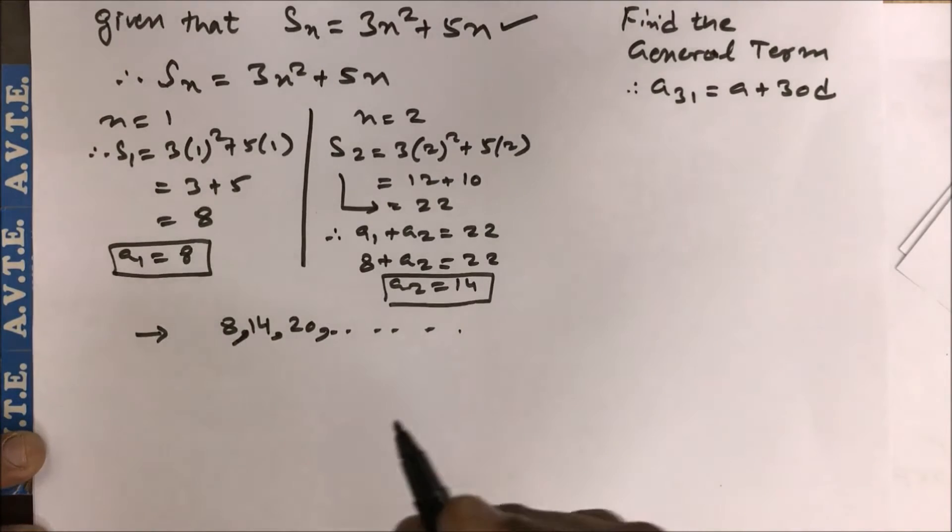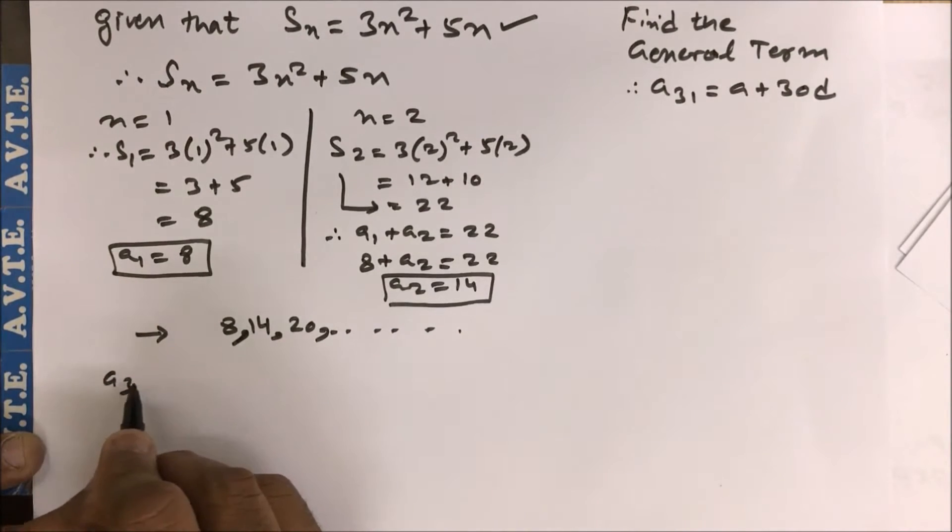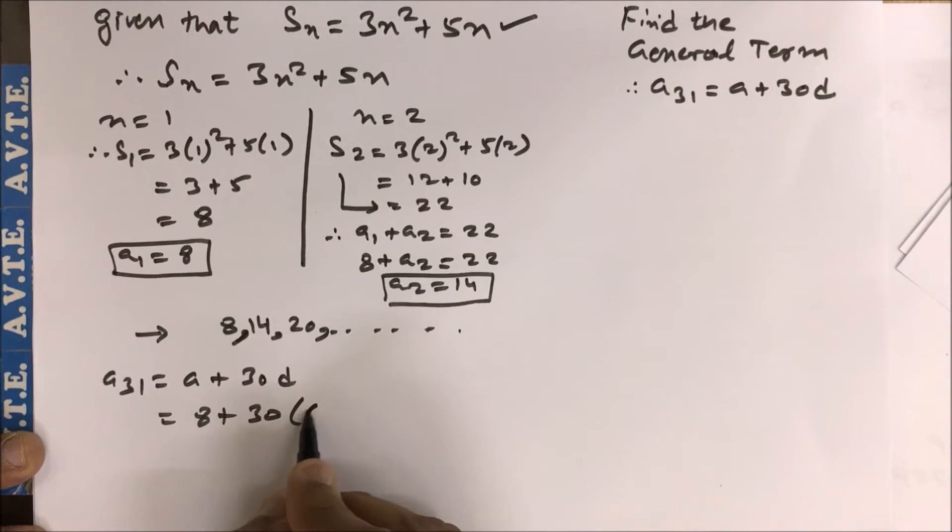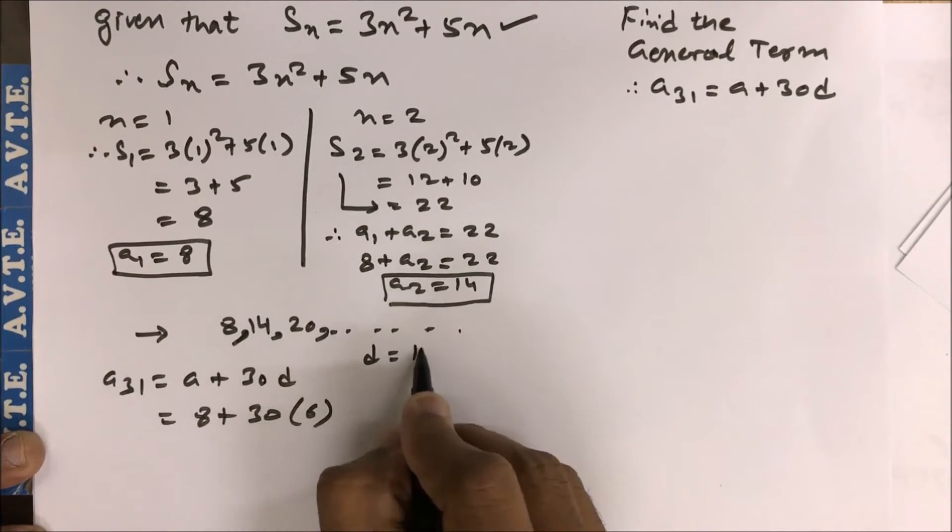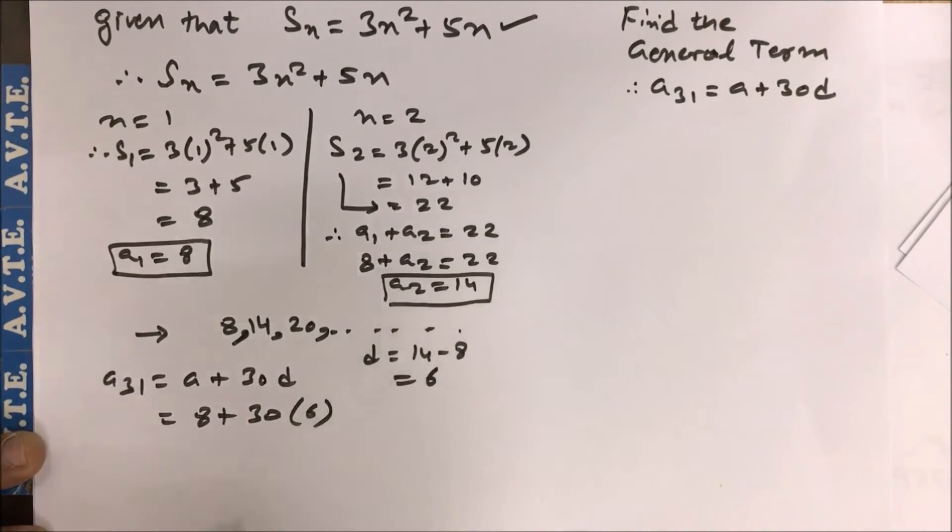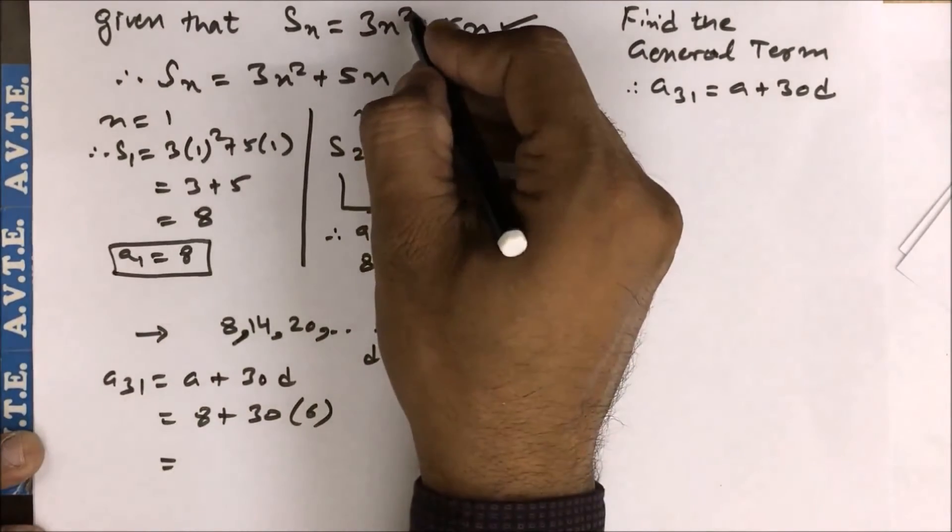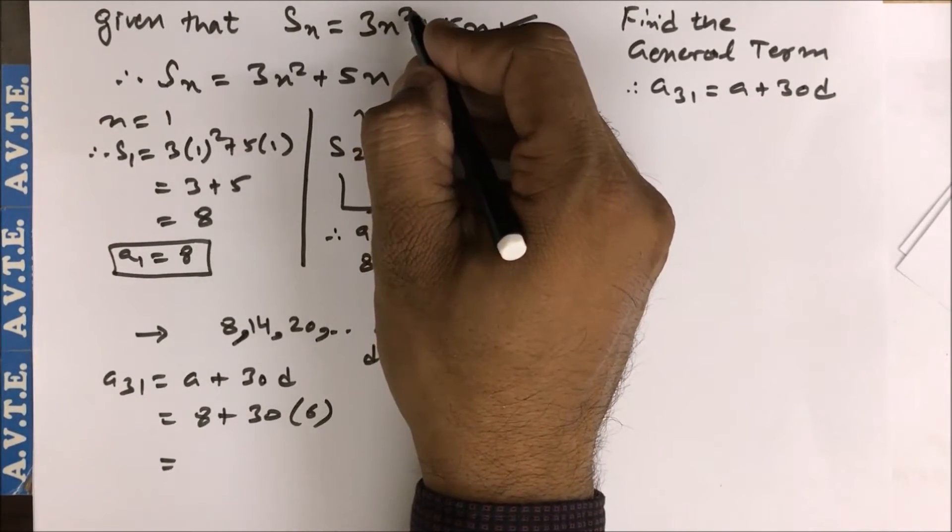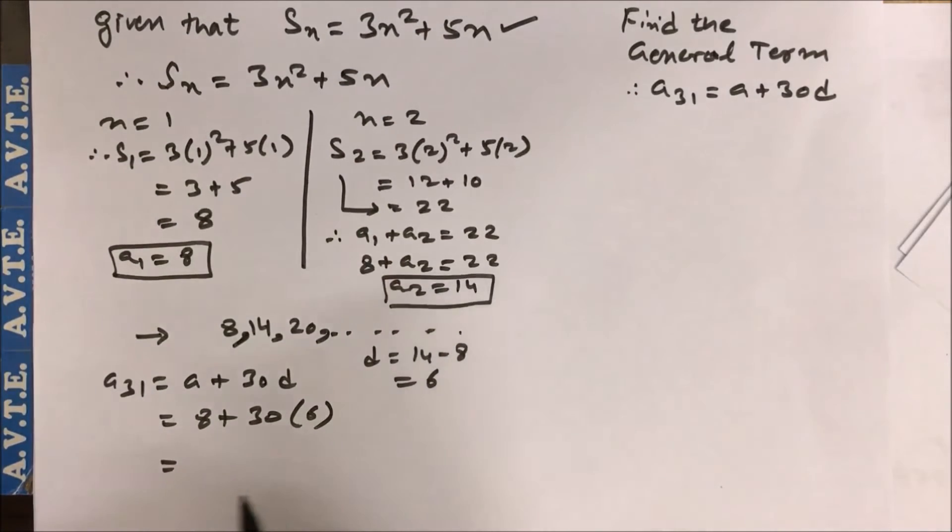So you can find a₃₁ with the help of a plus 30d. That is 8 plus 30 into 6. Your d is 14 minus 8, that is 6. You can check: 2 into 3, the derivative of n square is 2n, that is 2 into 3 is also 6. So you have 188.